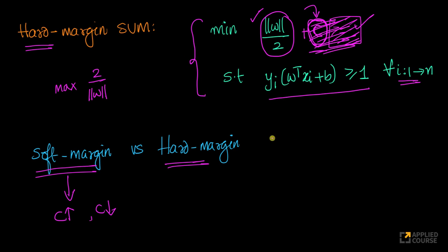What hyperparameters do you have in the hard margin SVM formulation? Because one way to overfit or underfit is to play with hyperparameters. There is no hyperparameter here — you are minimizing with respect to W and B only. There is no hyperparameter that you can tinker to either overfit or underfit.